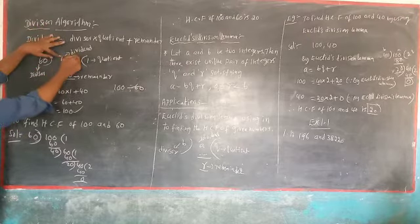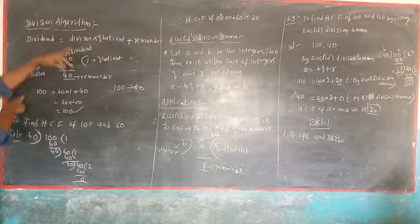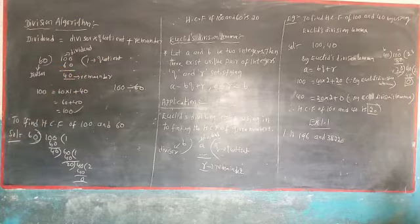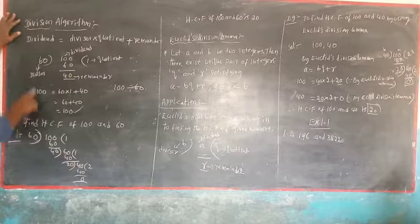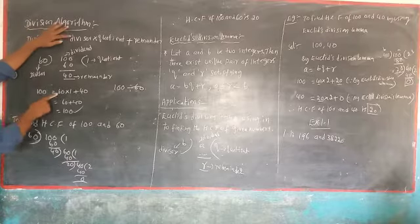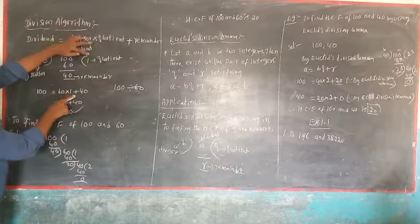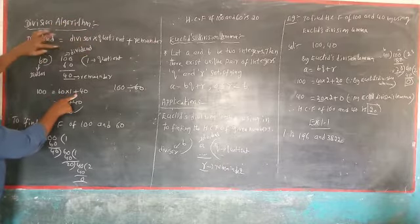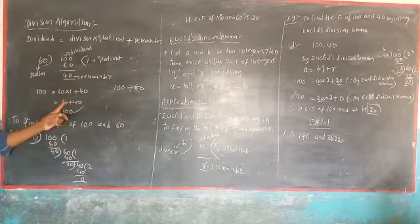So here, 100 is the dividend and 60 is the divisor, 1 is the quotient, and 40 is the remainder. Now, to check whether it is correct or not, by using the Division Algorithm — that is, divisor into quotient plus remainder — divisor is 60 into quotient 1, plus remainder 40, gives 60 plus 40, which is 100. So it is correct.